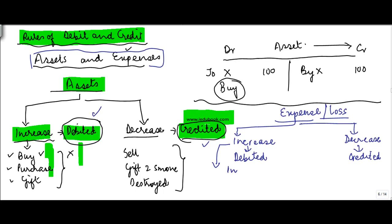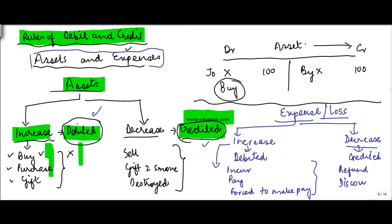An increase in expense happens when you incur an expense or pay for an expense. A decrease in expense could happen when you get a refund — your money is paid back — or someone gives you a discount; that's a decrease in the expense. In those cases, the expense accounts or loss accounts are credited. So in an expense account, when there is an increase, you debit it.